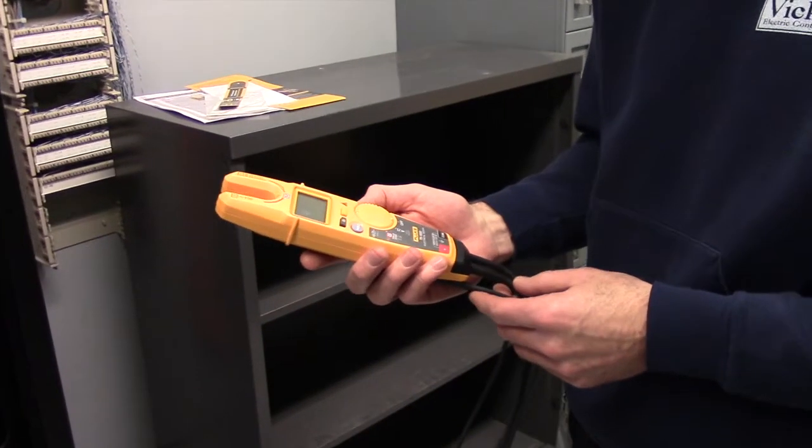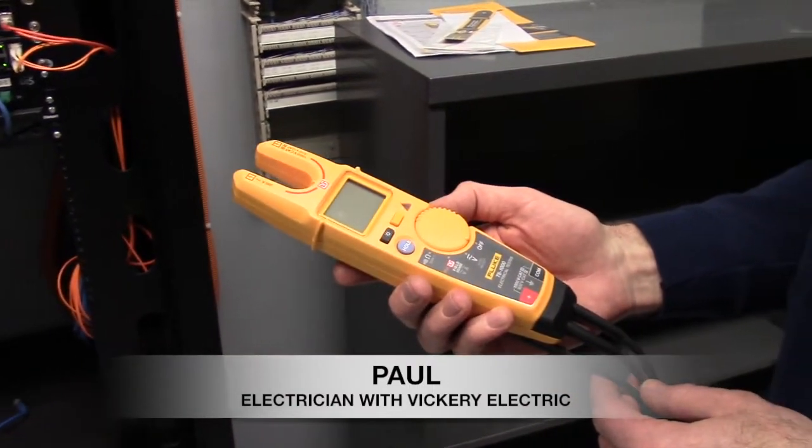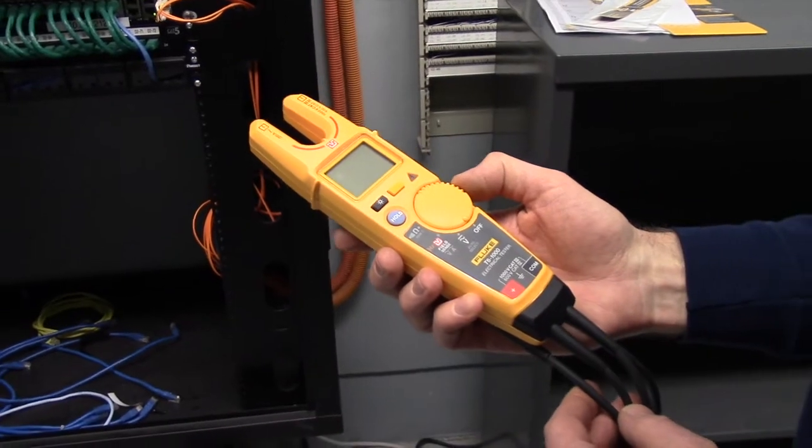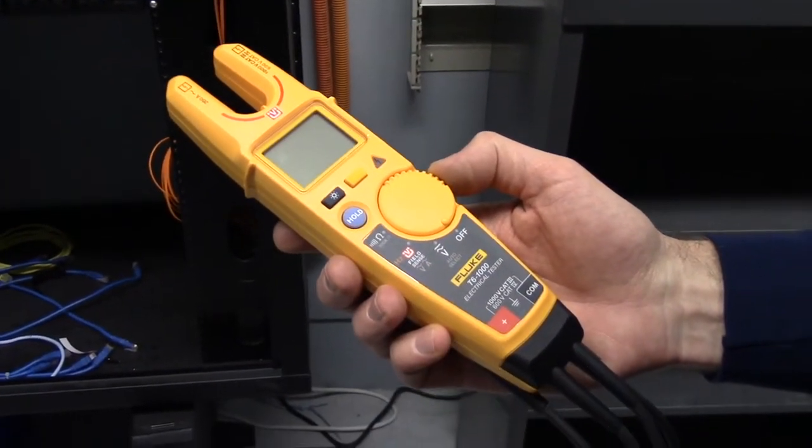This is the Fluke T6-1000 electrical tester. It looks like a normal tester but has an extra function called field sense, which allows you to measure voltage of a conductor without having to actually touch a bare conductor.